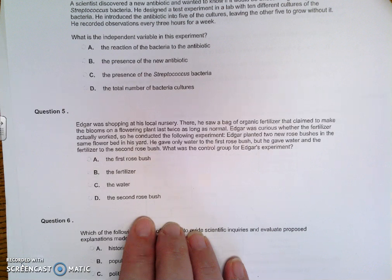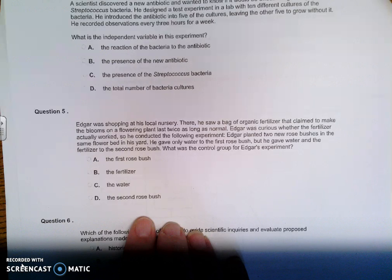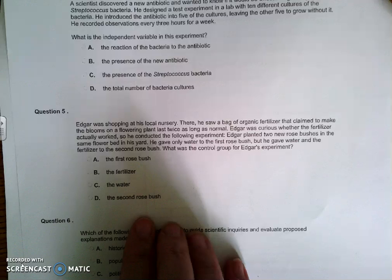Edgar was shopping at his local nursery. There he saw a bag of organic fertilizer that claimed to make the blooms on a flowering plant last twice as long as normal. Edgar was curious whether the fertilizer actually worked, so he conducted the following experiment. Edgar planted two new rose bushes in the same flower bed in his yard. He gave only water to the first rose bush, but he gave water and fertilizer to the second rose bush. What was the control group for Edgar's experiment?